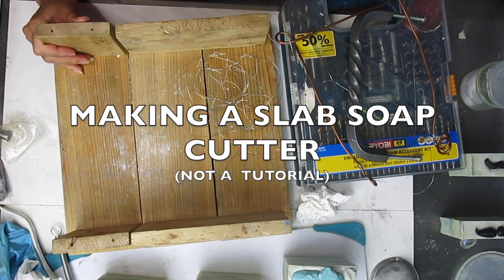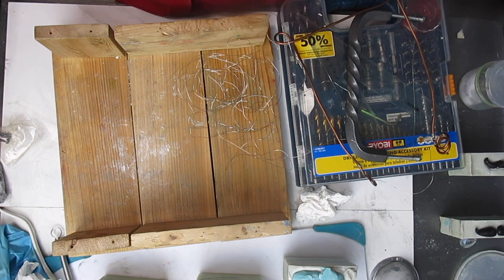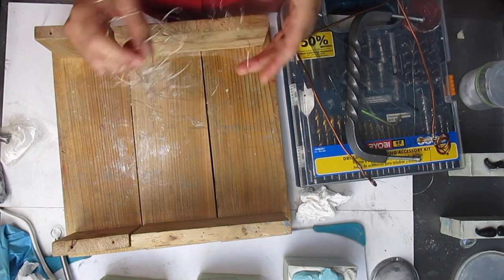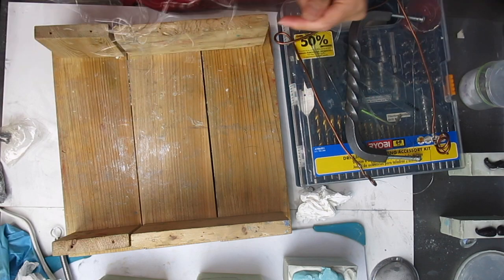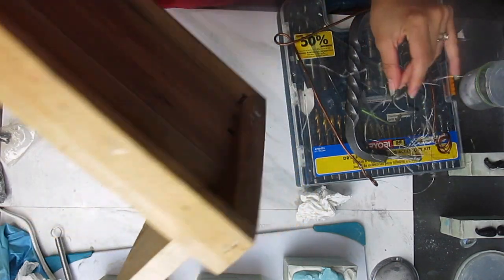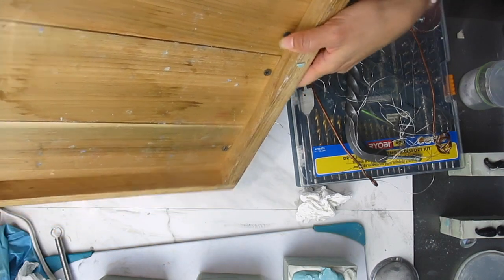Hi! This is Glenda and today I wanted to show you my attempt, I still don't know how this is gonna work out, at building a wire cutter for slab soap. What I have here used to be a worm composter bin.